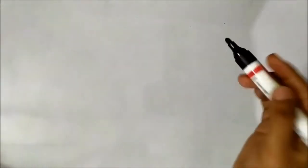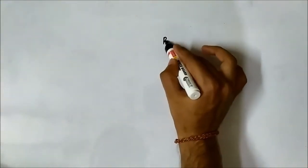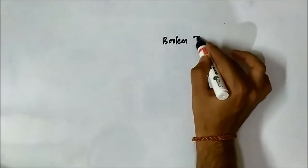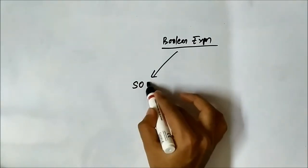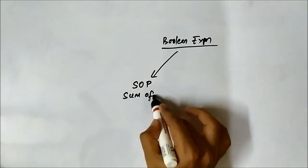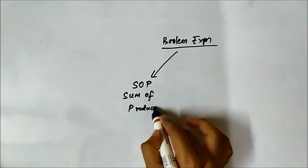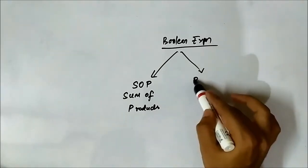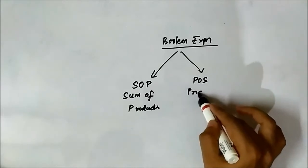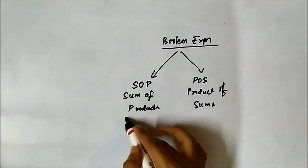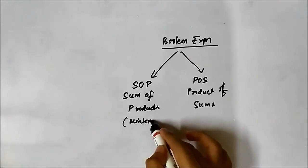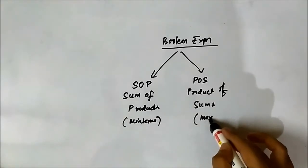We have already discussed SOP, but we are going to cover this again so that we have a good understanding of what we are going into. As we know, Boolean expressions can be represented in SOP — that is sum of products — or POS — product of sum. SOP is also represented as sum of min terms and POS is represented as product of max terms.